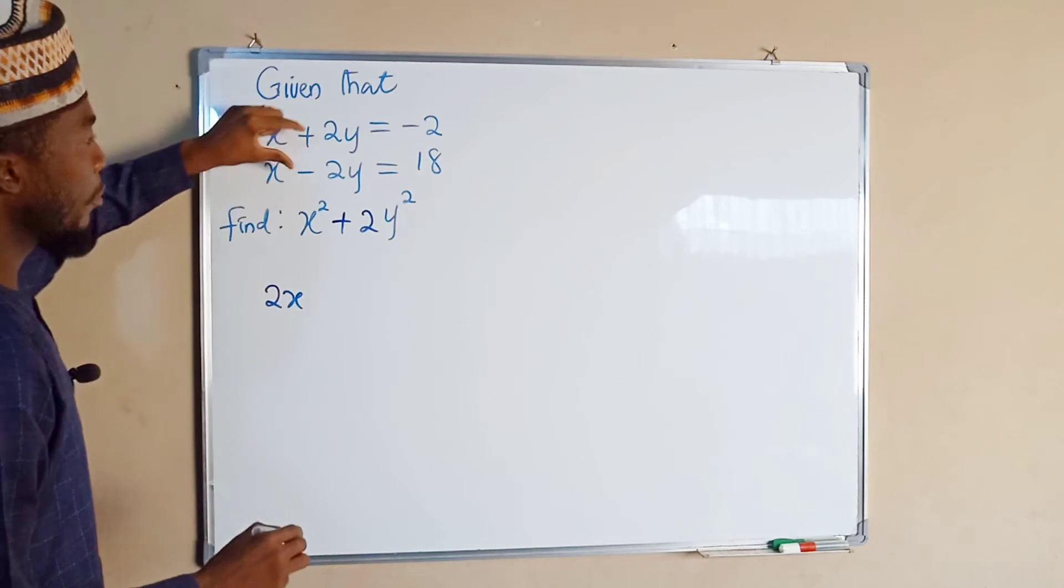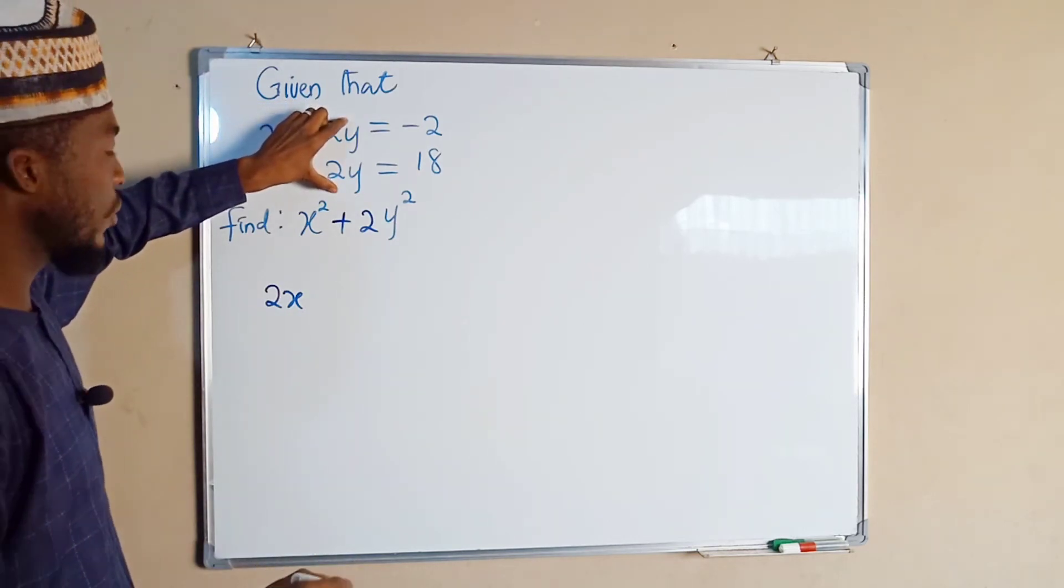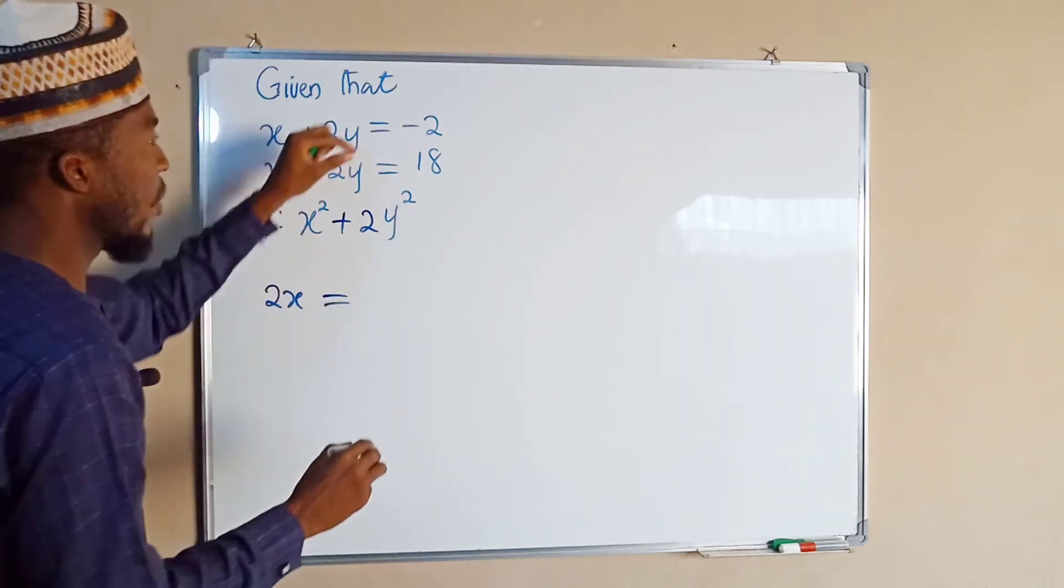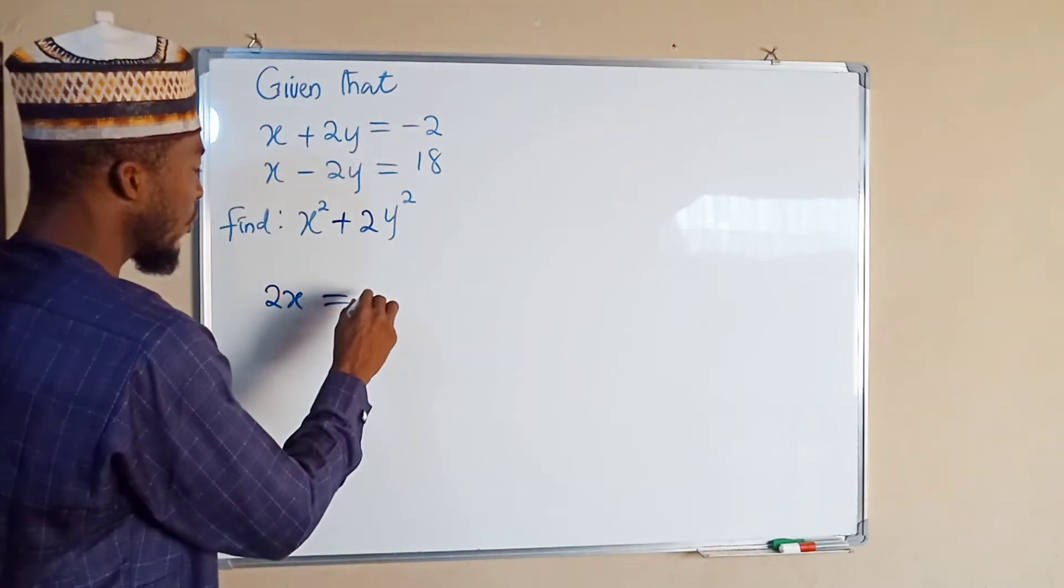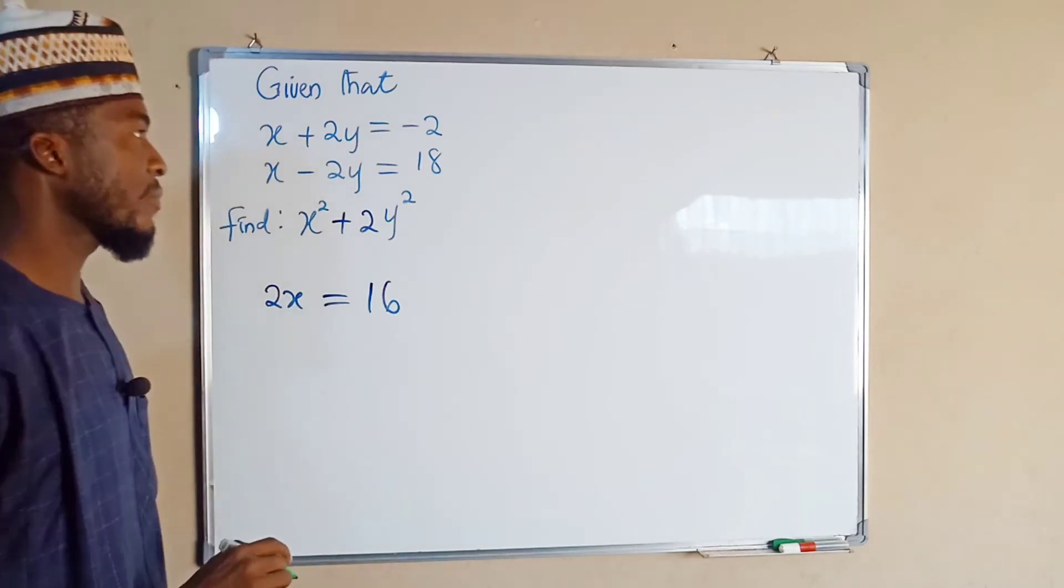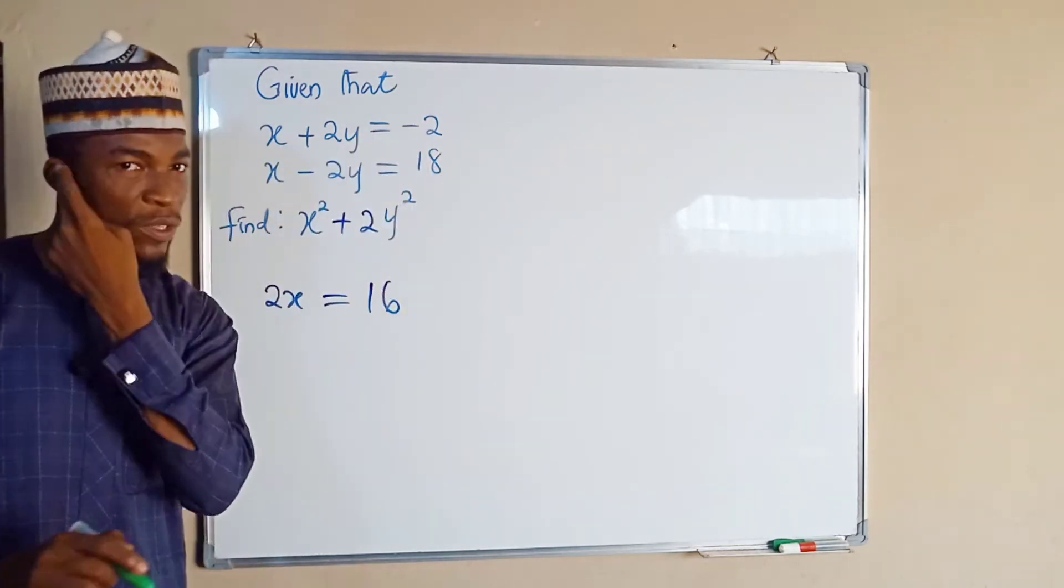But adding these two middle terms will result to 0, hence we have only -2 + 18 which is also equal to 16, because 18 - 2 is 16.